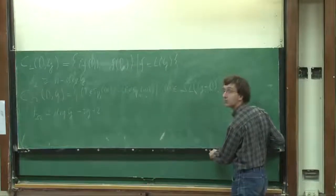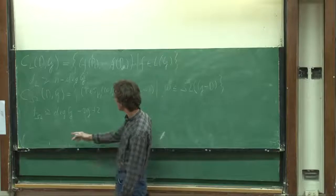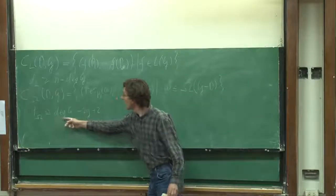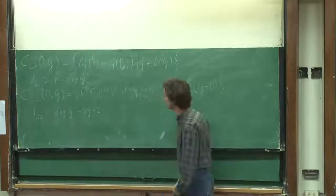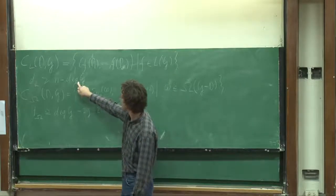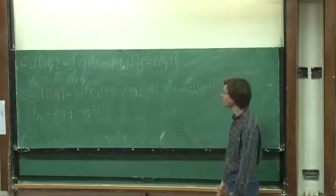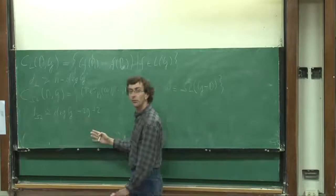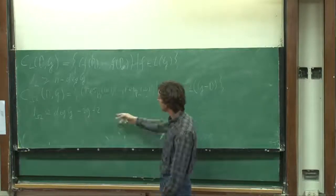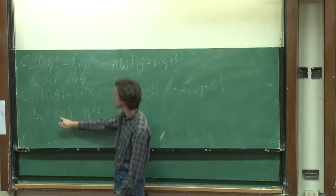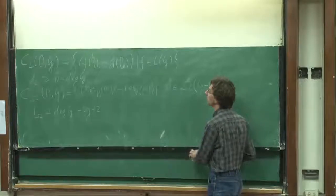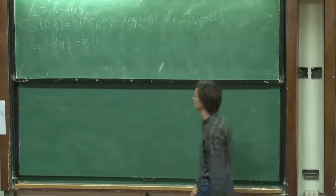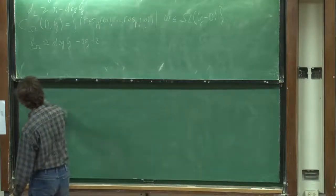Looking at these two bounds, they are quite good in general, but if the degree of the divisor is small—say less than 2g minus 2—then this bound becomes negative, which is still true but rather empty. Similarly, if the degree is larger than n, we get a completely trivial statement. So there is something disturbing about these results. What I want to do today is give a slightly better bound, especially for low and high degree divisors. But first I also want to talk about an example and the decoding problem.